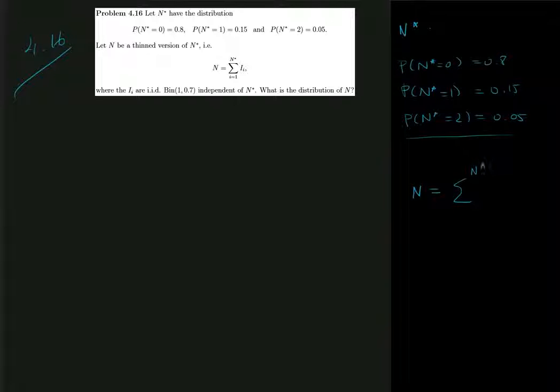What that means is if we have n star accidents, for example, then we consider each of them and do a coin toss that can result in 1 with probability 0.7 and result in 0 with probability 0.3.